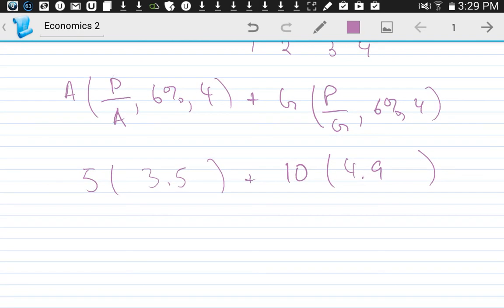So we have 3.5 times 5. Let's see, 5 times 3.5 is 17.5. So 17.5 plus 49 equals 66.5.